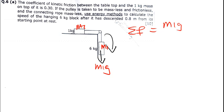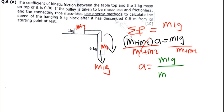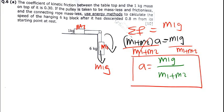When the system is moving, both M1 and M2 are moving. According to Newton's second law, the net force equals total mass times acceleration: (M1 + M2) × A = M1G. Dividing both sides by (M1 + M2), the acceleration equals M1G divided by (M1 + M2). This is the formula for the acceleration of this type of pulley system when there is no friction.